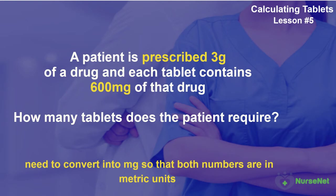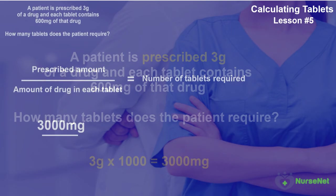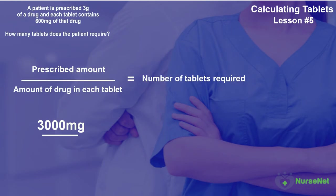Therefore, 3g multiplied by 1,000 gives us 3,000mg. Now we can crunch the numbers in our formula: 3,000mg of prescribed dosage divided by the 600mg that each tablet contains gives us 5 tablets.